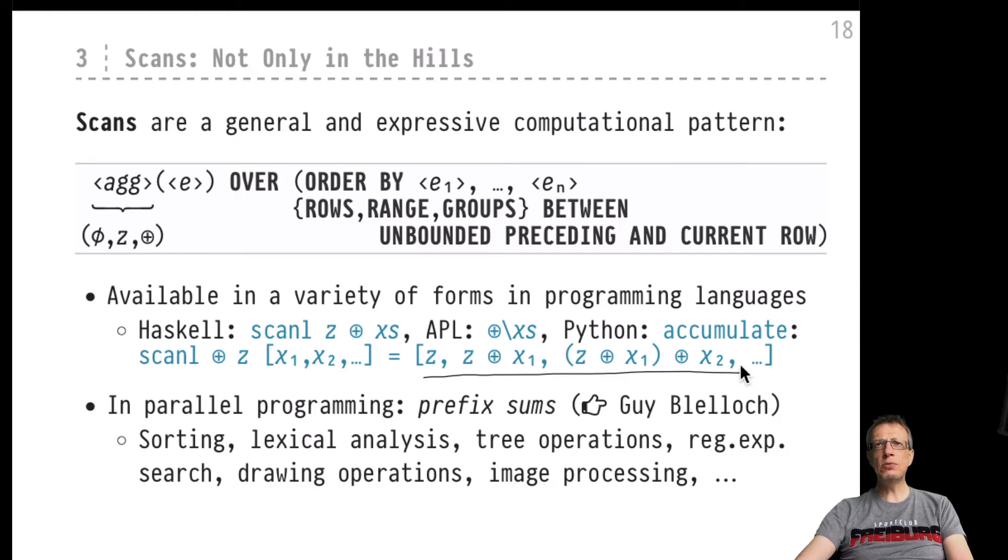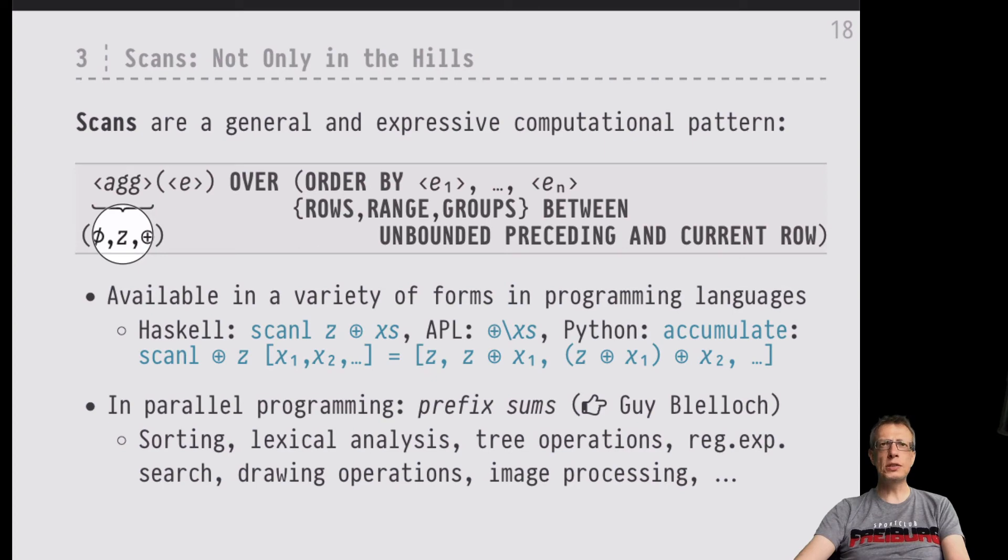And this is just the result that we can expect to see in the SQL case. If you recall our example that was computing a running sum, in the running sum example, this zero here, the zero here would be just the zero, the natural number zero. And this merge operation here would just be the addition.